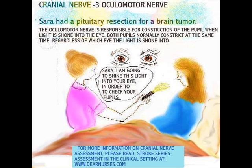Now let's talk about the ocular motor nerve. When you go to assess a patient's pupils — in this case a patient who's had a tumor resection — the pupils constrict when light is shone in. That is because the third cranial nerve, the ocular motor nerve, is the one that constricts the pupils. If you go to dearnurses.com and look at cranial nerve assessment, you'll see that there are many other nerves originating in the brain which do different things.